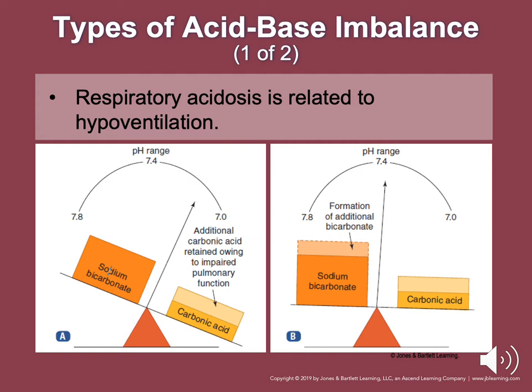Additional causes of hypoventilatory acidosis include respiratory arrest with apnea, pulmonary edema with fluid buildup getting into the lungs making it hard to breathe off carbonic acid, closed head injuries due to the Cushing reflex causing hypoventilation, and chest trauma causing a decrease in respiratory rate.